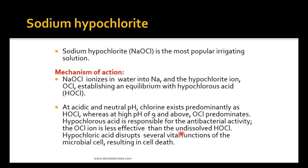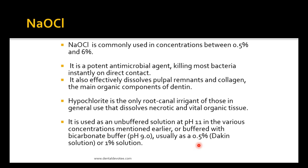Sodium hypochlorite ionizes into water and sodium and the hypochlorite ion (OCl⁻), establishing an equilibrium with hypochlorous acid (HOCl). At acidic and neutral pH, chlorine exists as HOCl (hypochlorous acid), whereas at high pH of 9 and above, OCl⁻ (hypochlorite ion) predominates. Hypochlorous acid is responsible for the antibacterial activity, and the OCl⁻ ion is less effective than the undissociated HOCl. Hypochlorous acid disrupts several vital functions of the microbial cell, resulting in cell death.